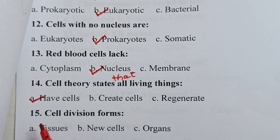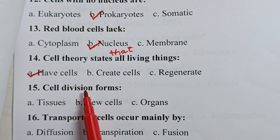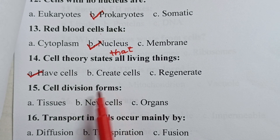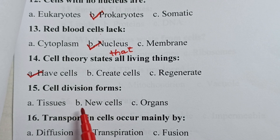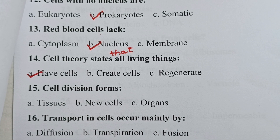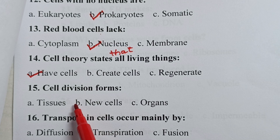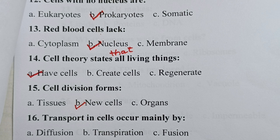Question fifteen: cell division forms — is it tissues, new cells, or organs? Your correct answer is new cells. So, cell division gives rise to new cells.